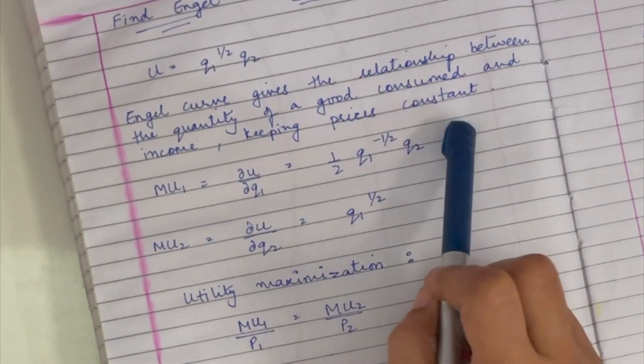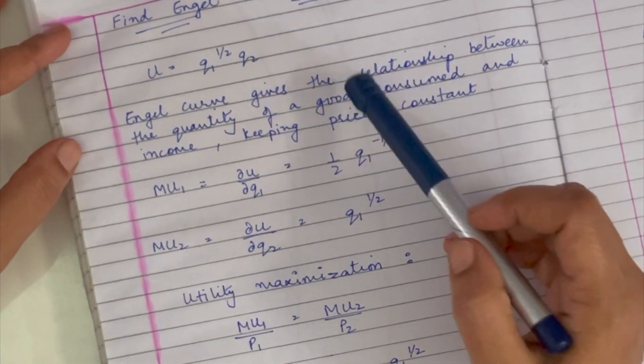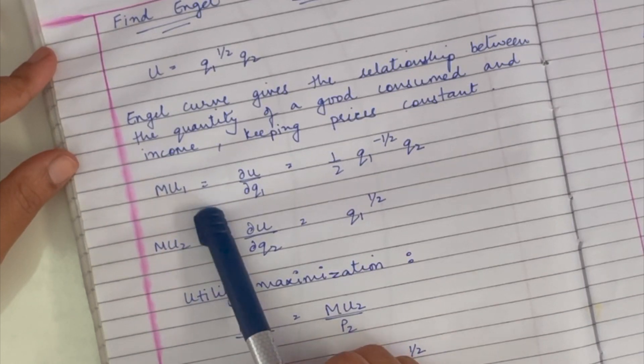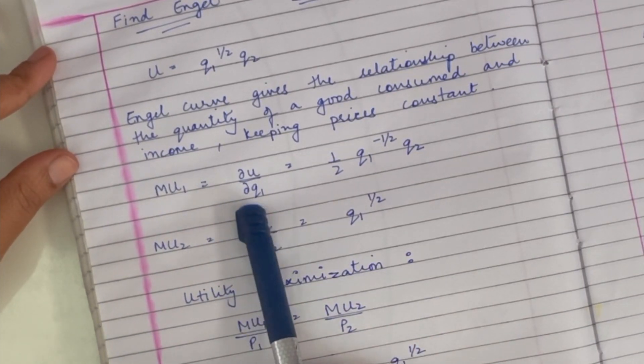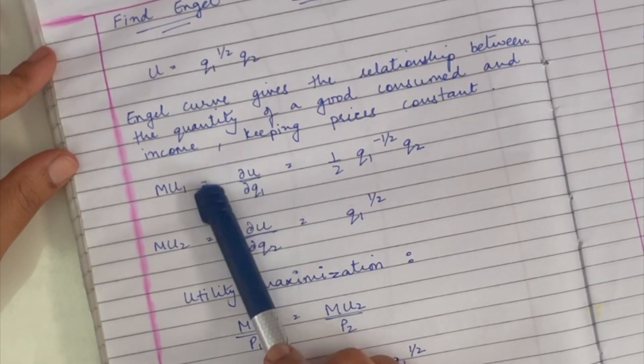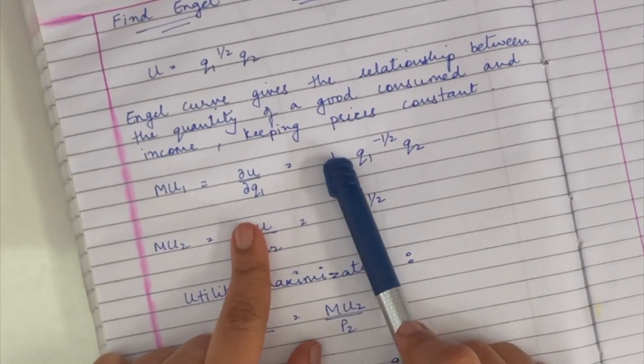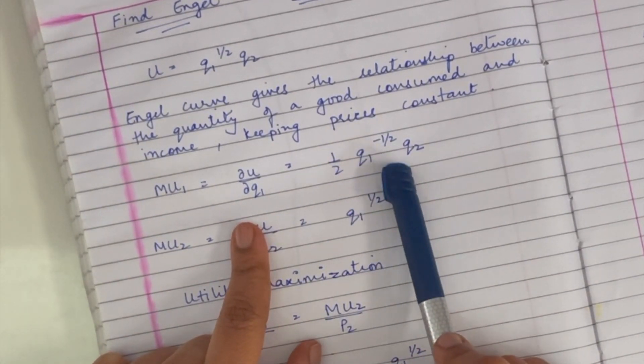In order to derive the Engel curve, the first thing we have to do is check out the marginal utility for good one, which is given by partial derivation of the utility function with respect to q1. So that is half q1 minus half q2.